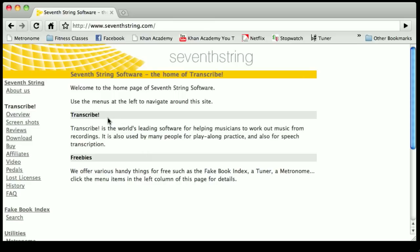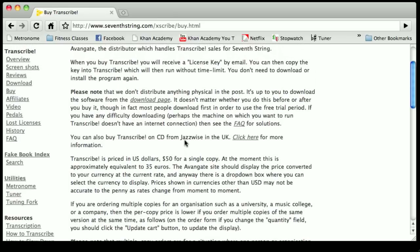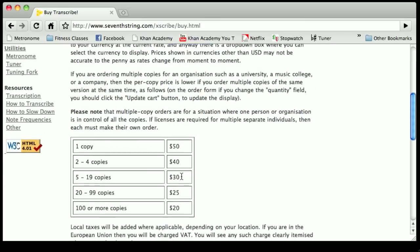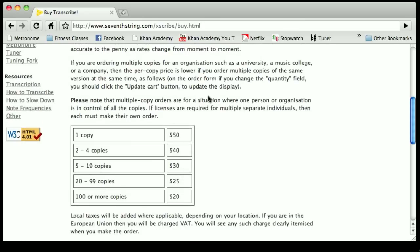This program Transcribe, if you stick with music, if you are a musician and remain a musician, this program might be the single best purchase you ever make, dollar for dollar. First off, let's go to the buy page real quick. Transcribe is priced in U.S. dollars, $50 for a single copy, and they also have this thing where one person is in control of all the copies.